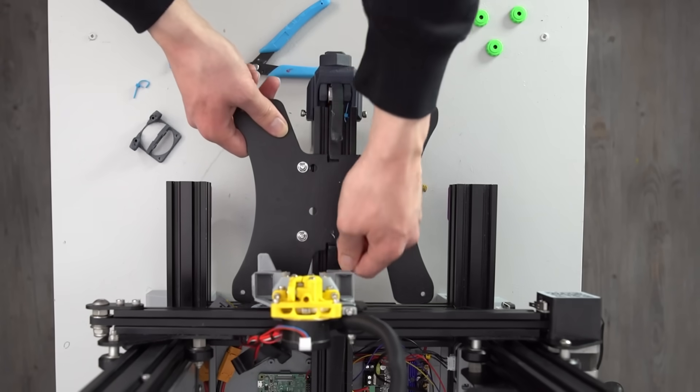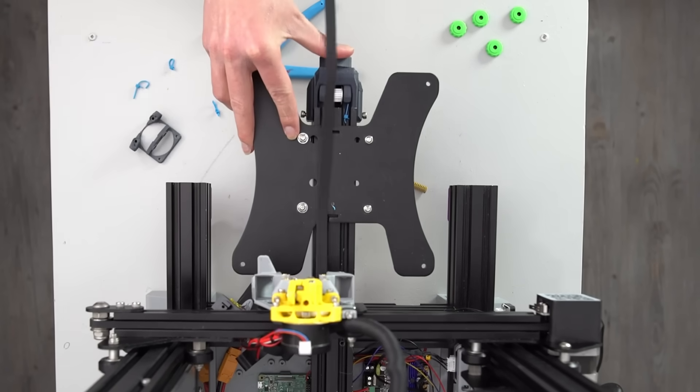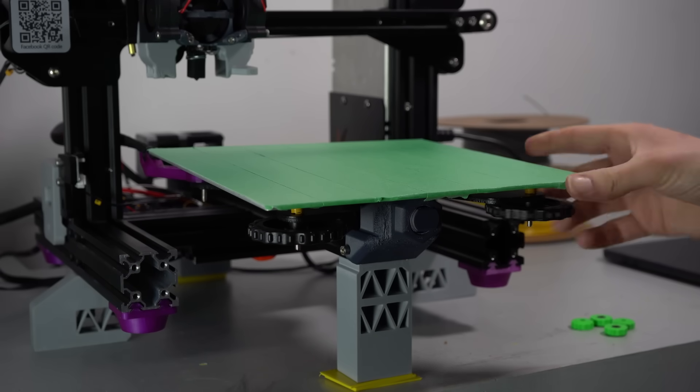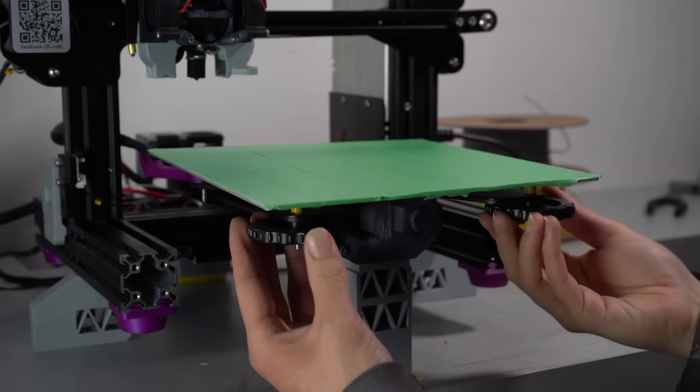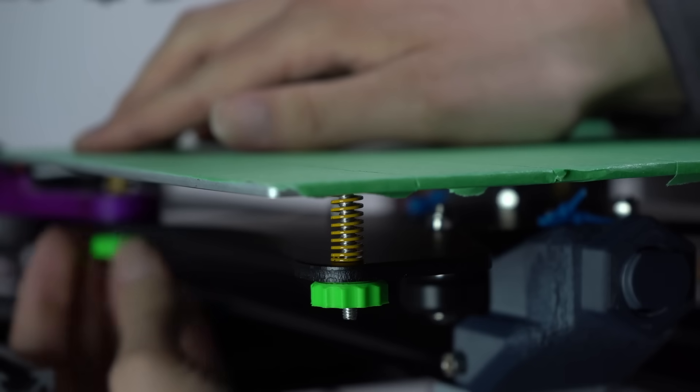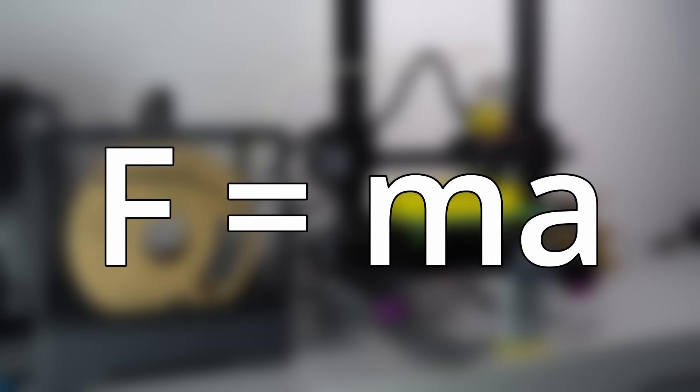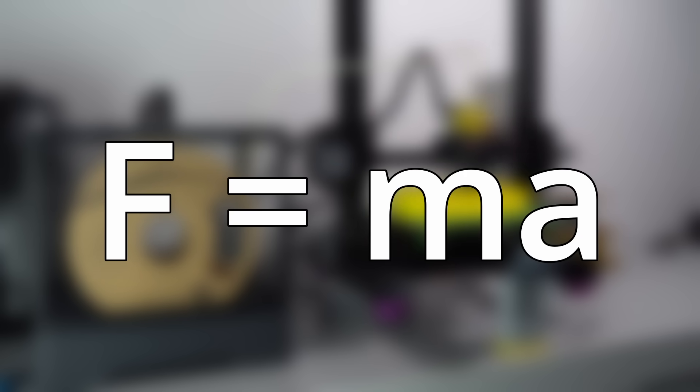So what are the best upgrades for making an Ender 3 insanely fast? Well, looking at the printer there are a few obvious ones. First and foremost, the Y axis. The heavy bed on the Y axis will always be a limiting factor for speeds and accelerations, and the stock V wheels aren't very rigid either. If we want something to go faster we have two options. We can either make it lighter or add more power. So let's do both.